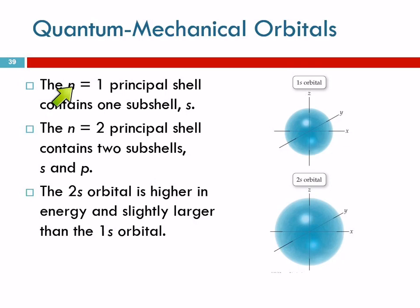So, in the principle shell number one, it only has one sub-shell, and that is the s sub-shell. Principle shell two, for the quantum number n equals two, that has two sub-shells. S and p. So, there's an s orbital in the second level. The s orbital from the second level is the same shape, but it's bigger, because it's higher energy. It's larger. They're both spherical.